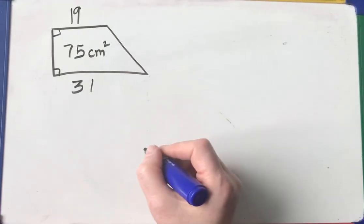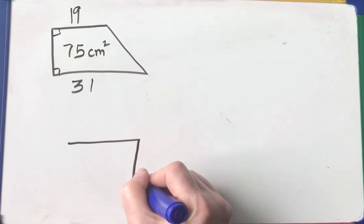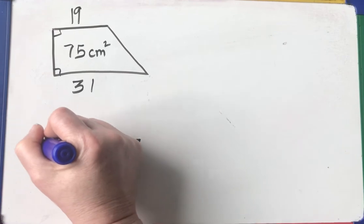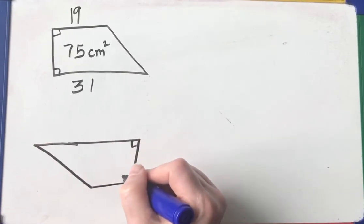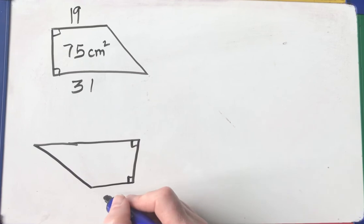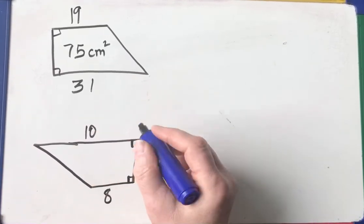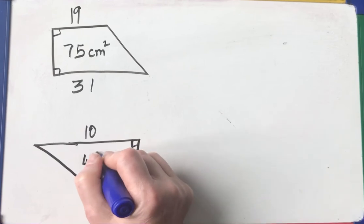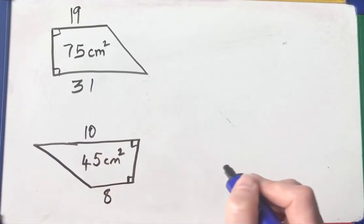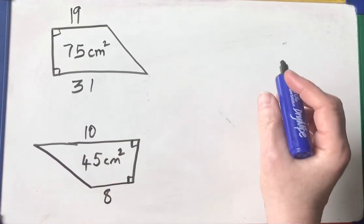Here's another one. People don't like them when they're upside down, but you know, it still works. Let's call that 8. This length 10. And the area is 45 centimeters squared. Here's another one.